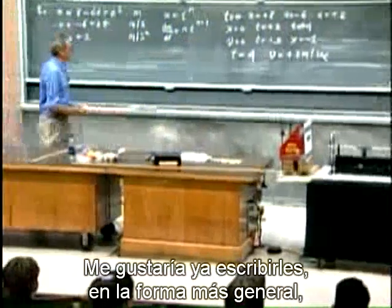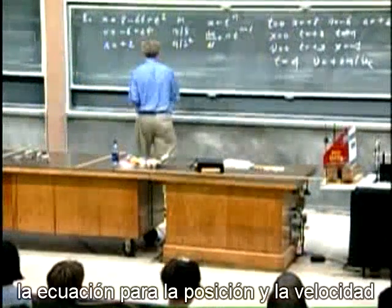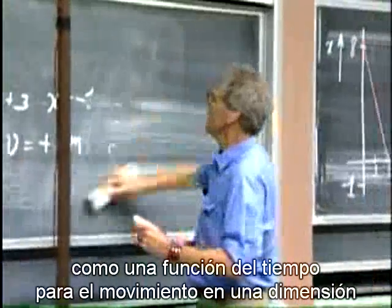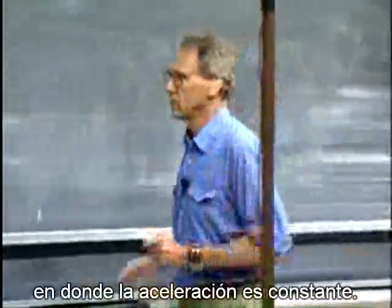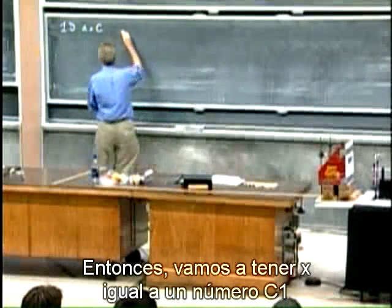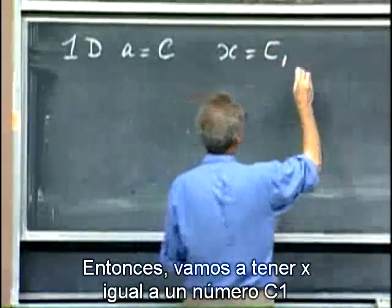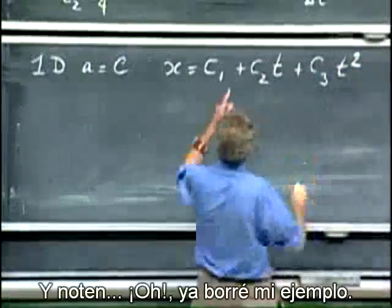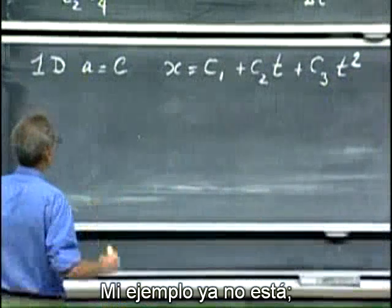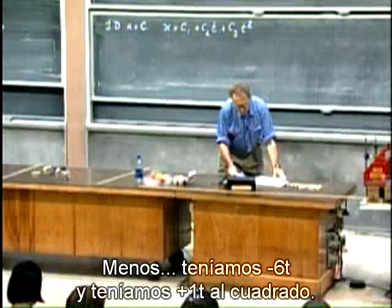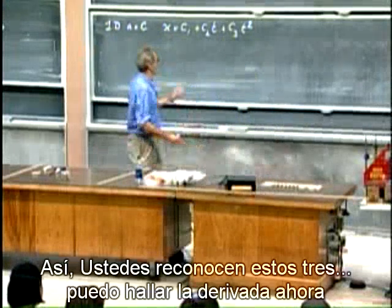I now would like to write down in the most general form the equation for the position and the velocity as a function of time for one-dimensional motion where the acceleration is constant. So it's one-dimensional again, and a is going to be a constant. The most general way to write it: x equals c1 plus c2 times t plus c3 times t squared. In my earlier example, c1 was 8, c2 was minus 6, and c3 was plus 1.